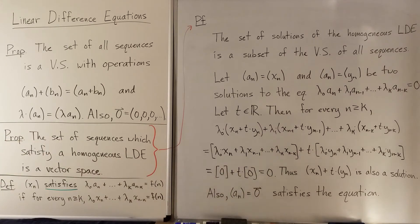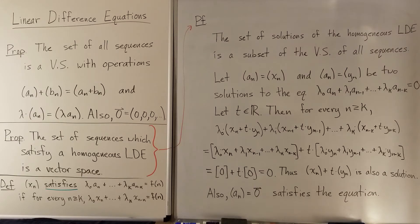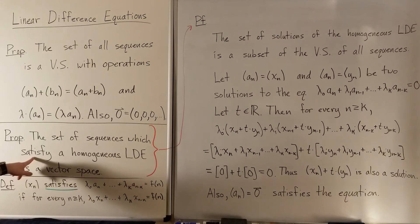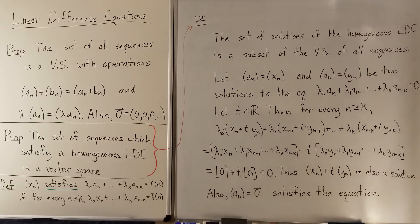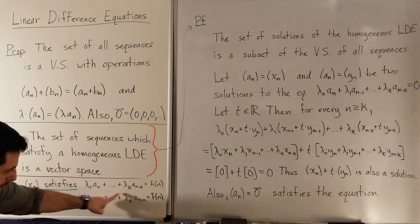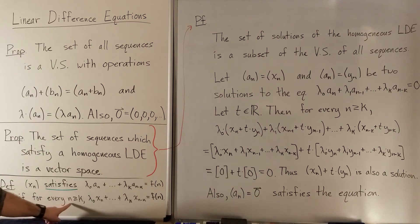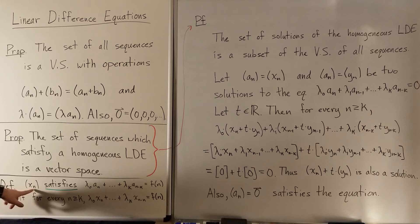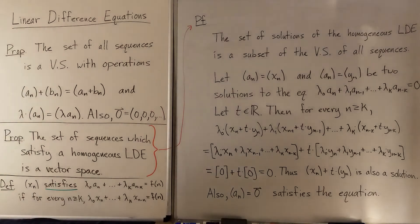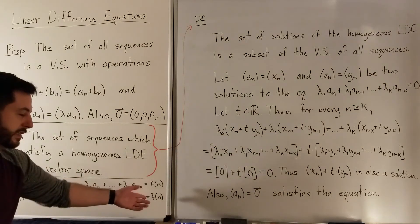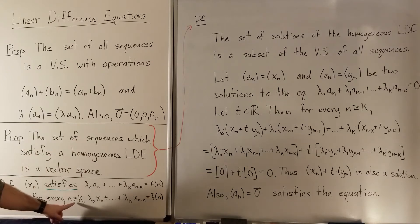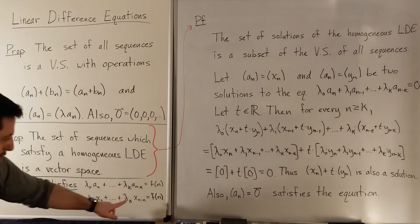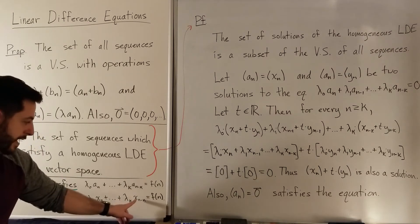More importantly, the next proposition says that the set of sequences which satisfy a homogeneous linear difference equation is a vector space. In case you're not clear on what it means to satisfy the equation: we say a sequence satisfies this difference equation if, whenever n is bigger than k, the equation holds. So if you plug in any k+1 consecutive terms starting from a position at least k, the equation should work — it always works no matter where you are.